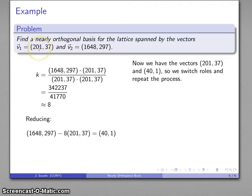Now what I have is (201, 37) and (41, 1) as my two basis vectors. So now I'm going to switch roles, and I'm going to repeat the process. I'm going to try to use this vector to reduce this vector.